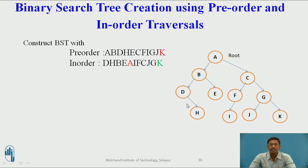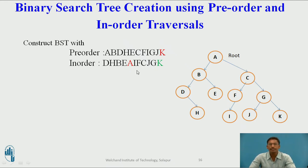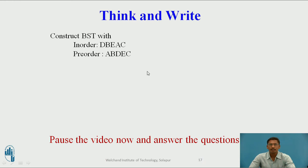In this way, you can construct a binary search tree from pre-order and in-order traversal by taking one by one node from pre-order and searching where it is placed in in-order. Now a think-and-write question: construct a binary search tree using the given in-order and pre-order traversal. You can pause the video and answer.